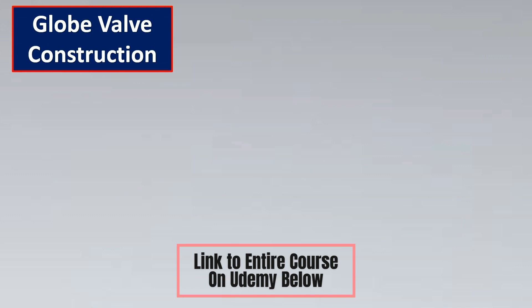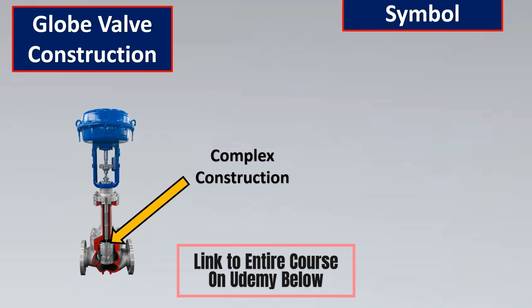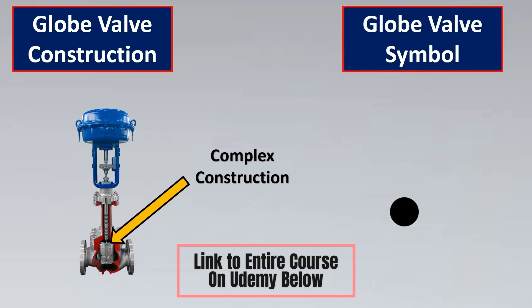Now let's look at one of the most widely used valves — the globe valve. The construction of a globe valve is very complex, with trim material, seat, and everything inside. So what engineers decided was to keep it simple: make a black dot and then add the generic valve symbol. Whatever is the confusing shape inside is covered by this black dot, and this means it is a globe valve symbol.